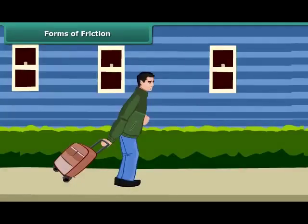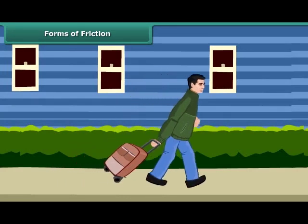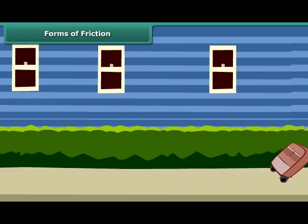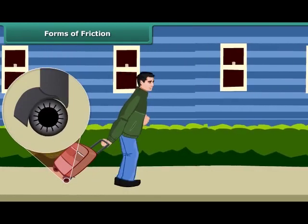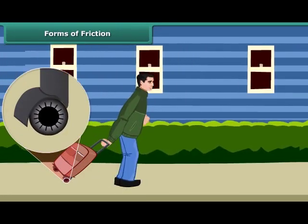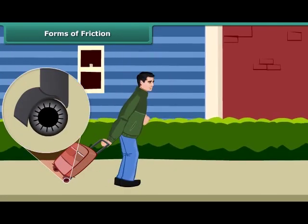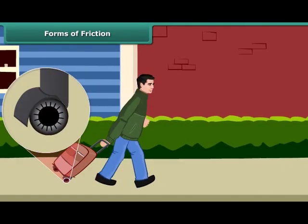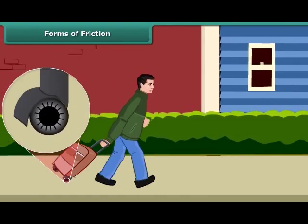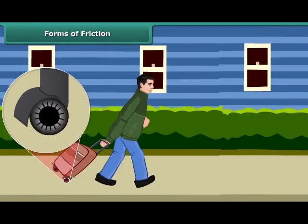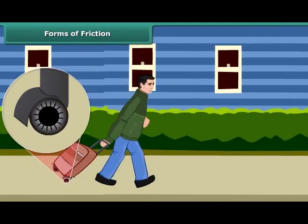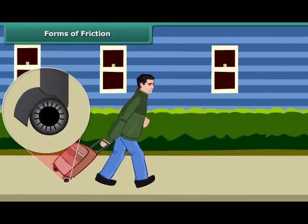You must have seen suitcases and other pieces of luggage fitted with rollers. Even a child can pull such pieces of luggage. The rollers reduce friction and allow objects to roll. It is always easier to roll than to slide a body over another. That is the reason it is convenient to pull luggage fitted with rollers.